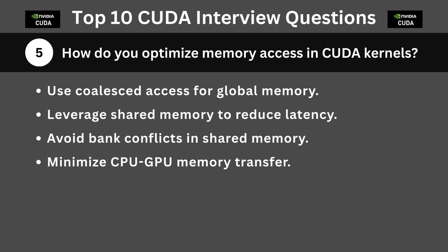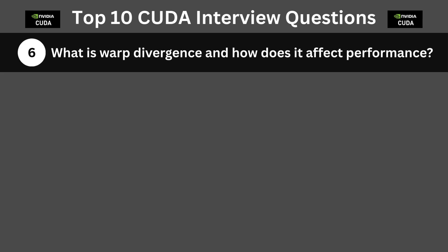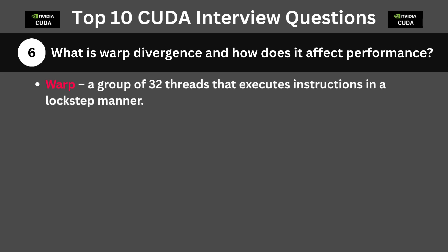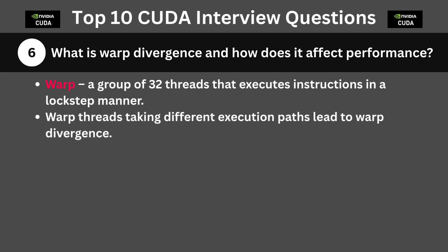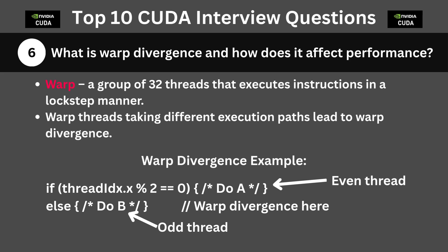The next question is: what is warp divergence and how does it affect performance? A warp in CUDA is a group of 32 threads that executes instructions in a lockstep manner. If threads in a warp take different execution paths — for example, in an if statement — they must serialize the paths, reducing parallel efficiency. In this example, every even thread of a warp will execute an if statement, and every odd thread will execute an else statement, causing warp divergence.